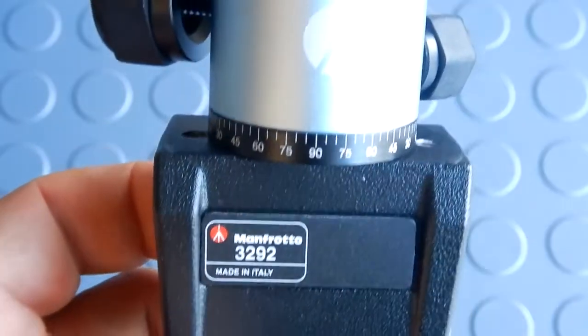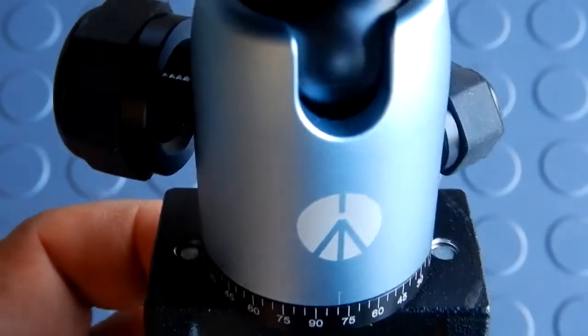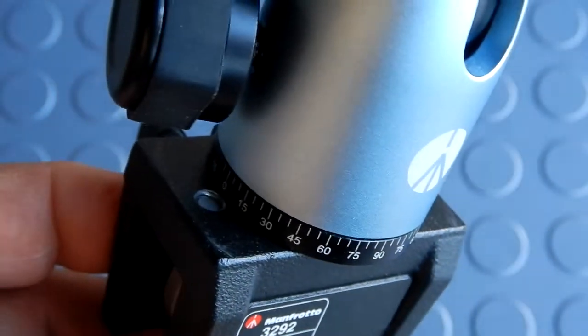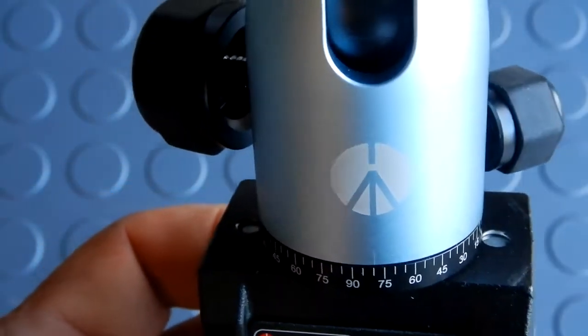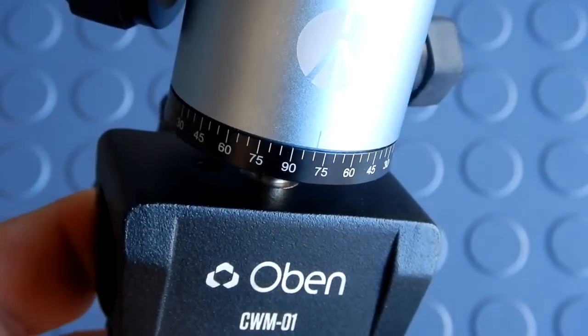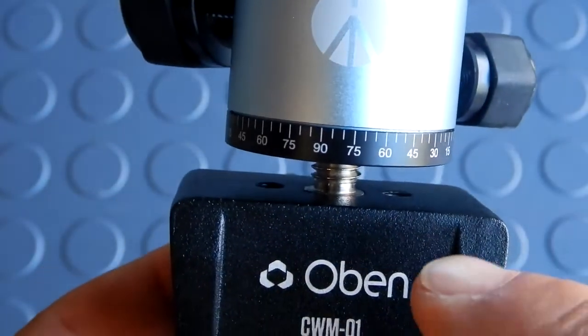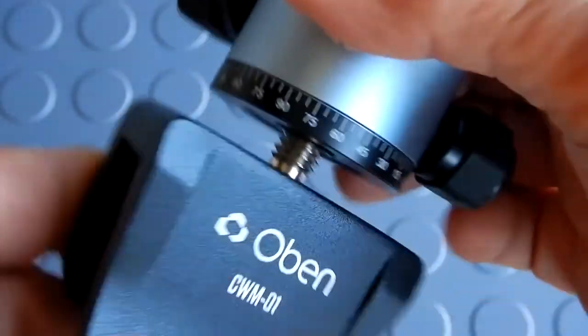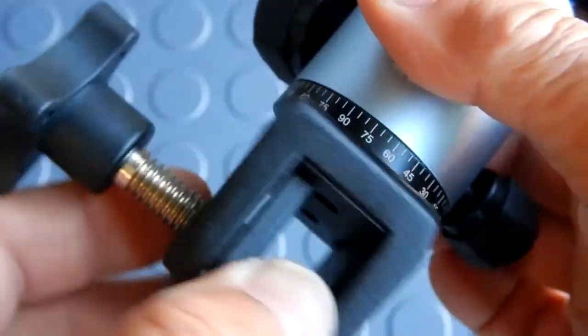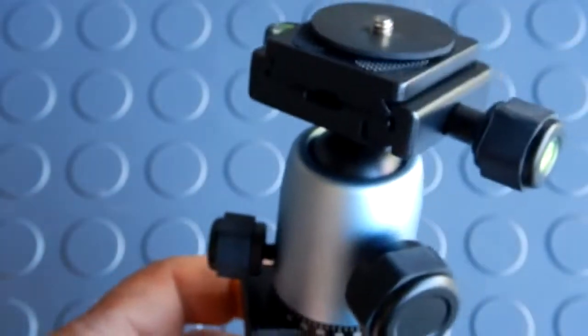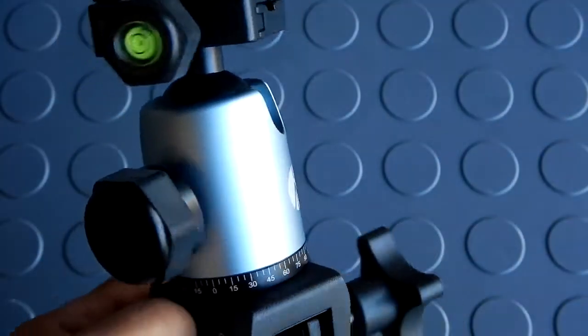Now with the Manfrotto and a smaller ball head, those lockdown bolts won't work. Now with the Oban on the other hand, you'll see those two lockdown bolts - they will easily fit the diameter of a small ball head so that you could lock it down.